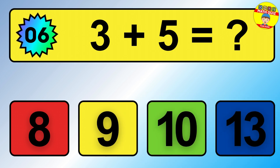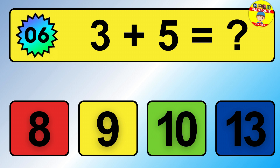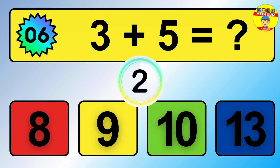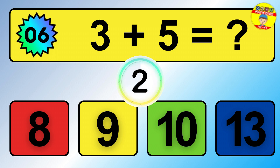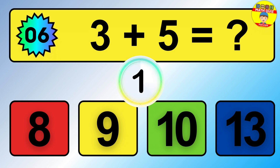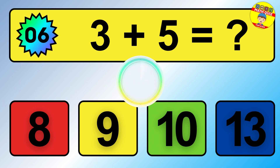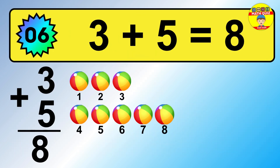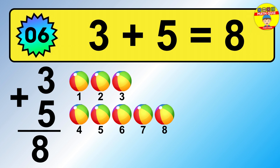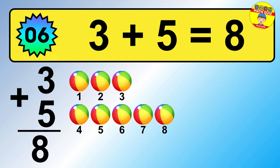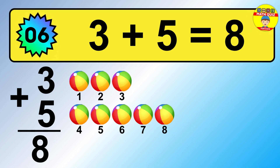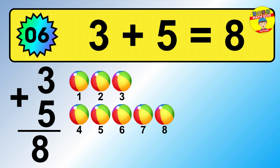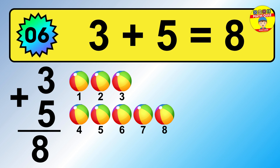Question 6. 3 plus 5 equals what? So the answer is 3 plus 5 is 8. Let's count it: 1, 2, 3, 4, 5, 6, 7, 8.